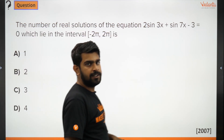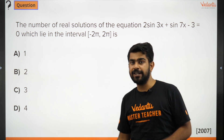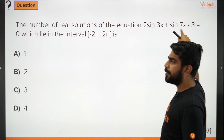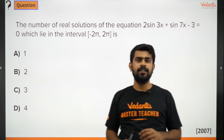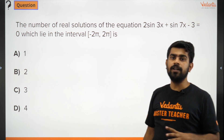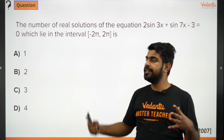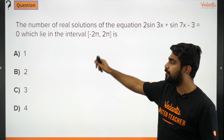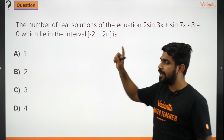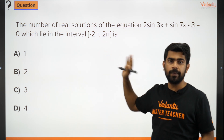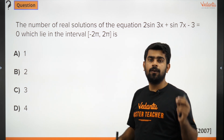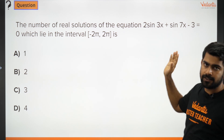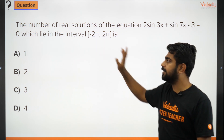The next question deals with solutions of trigonometric equations. They are asking for the number of real solutions of 2sin(3x) + sin(7x) − 3 = 0 which lie in the interval [−2π, 2π]. This is a range-based question. Note: your x should lie between −2π and +2π. Since the equation contains 3x and 7x, you must first solve for x and then verify it lies in this interval.